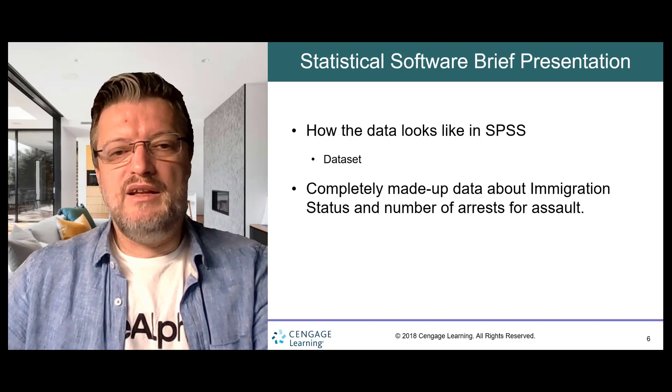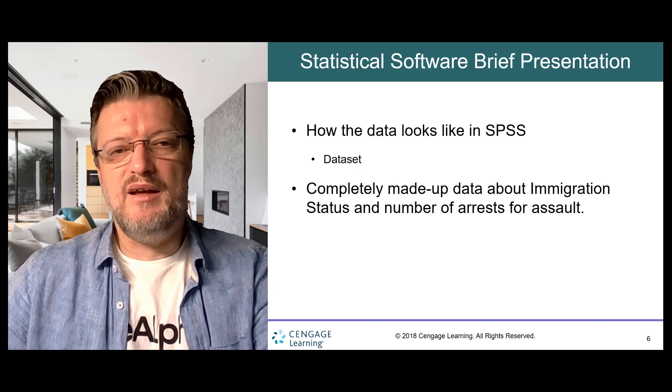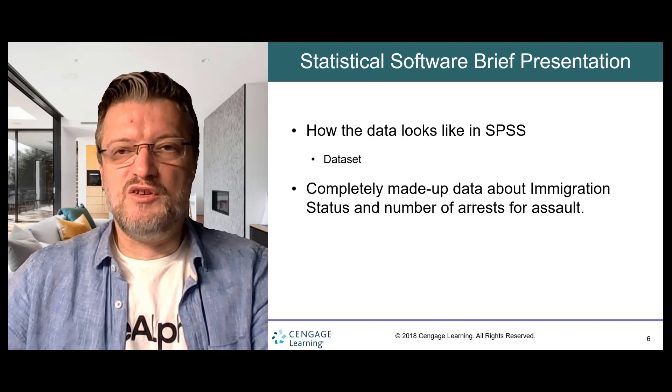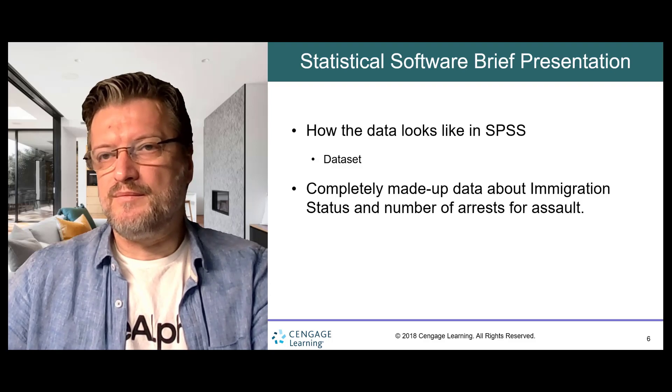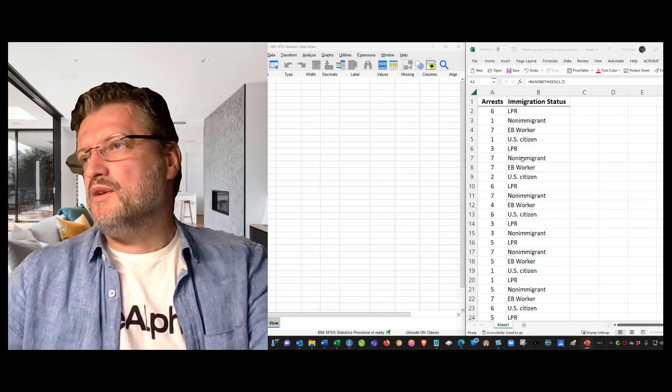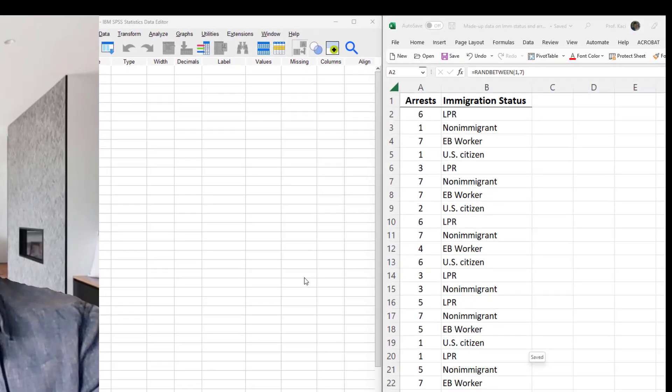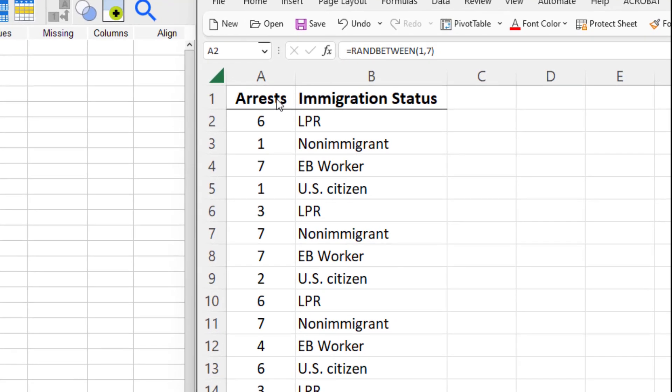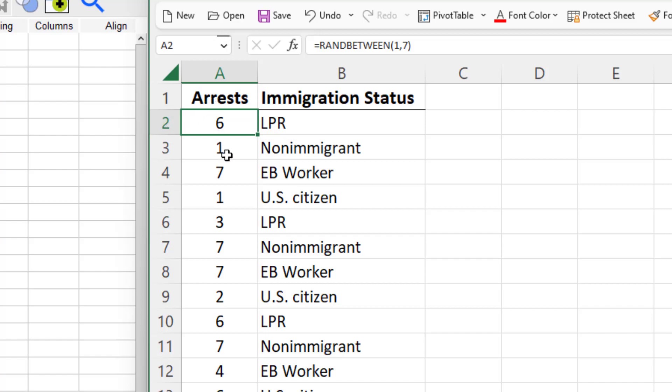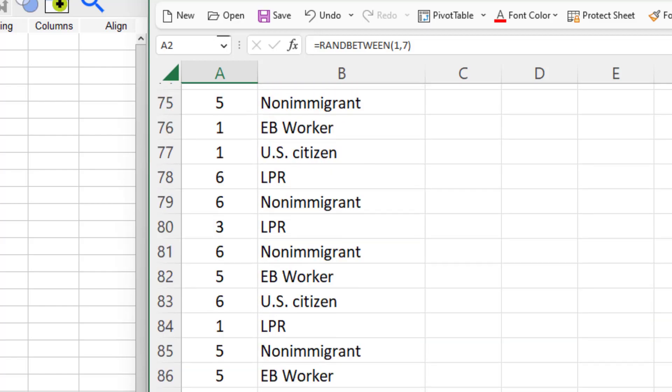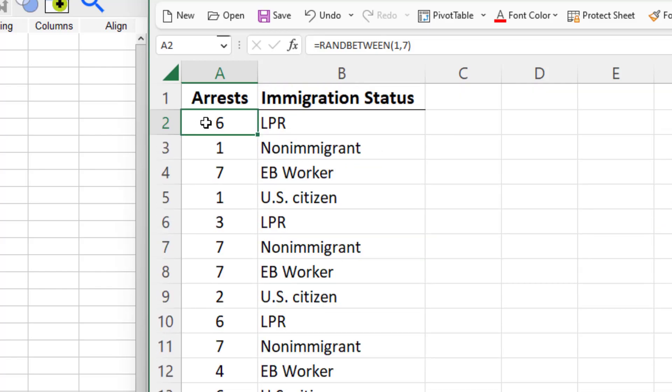I will briefly show you how data looks in SPSS. Bear in mind that this is completely made up data about immigration status and the number of arrests for assault, and I'll show you how I did it. So here you see Excel on the right side and SPSS on the left. So in Excel, I created the data. This is the number of arrests, and column B is the immigration status. As you can see, the observations or rows are each immigrant, and there are 100. So the number of arrests are created through a randomized function. It's a number between 1 and 7. I could have chosen different numbers. And then I took this data set and I put it into SPSS.